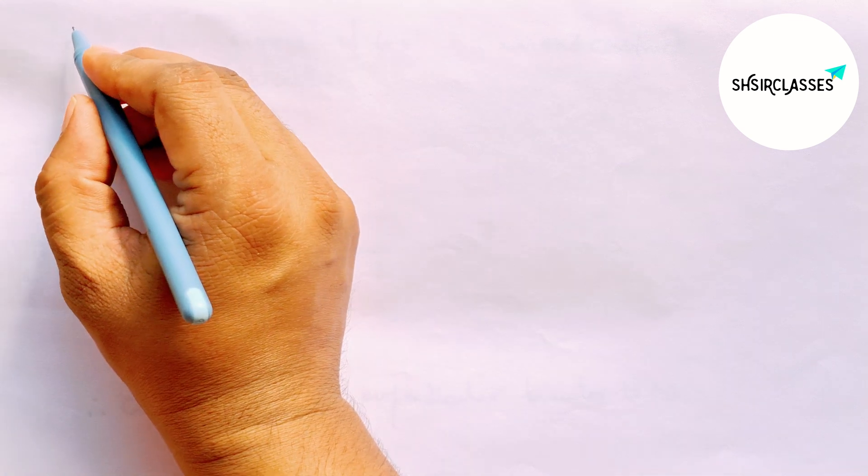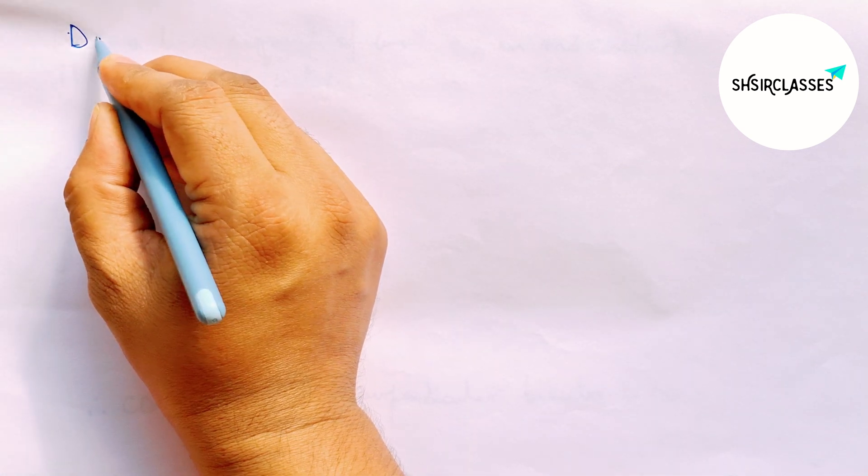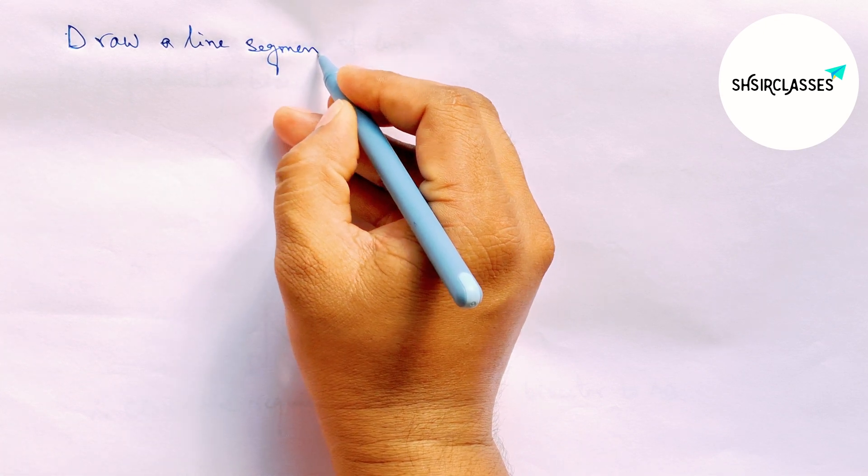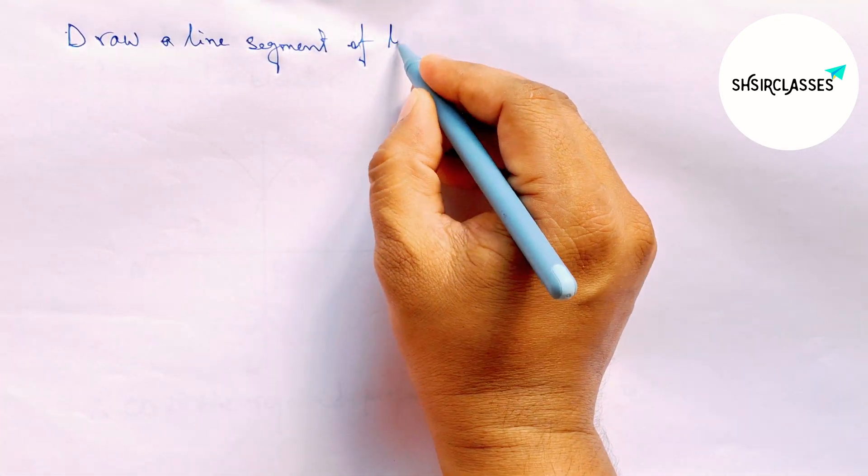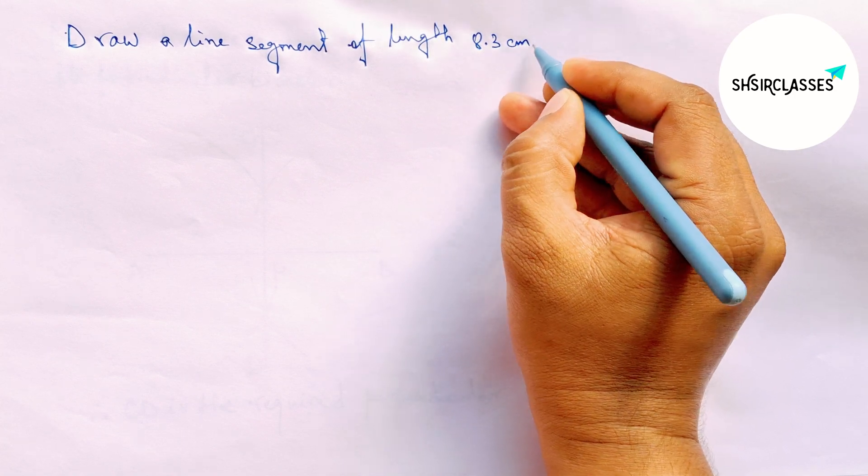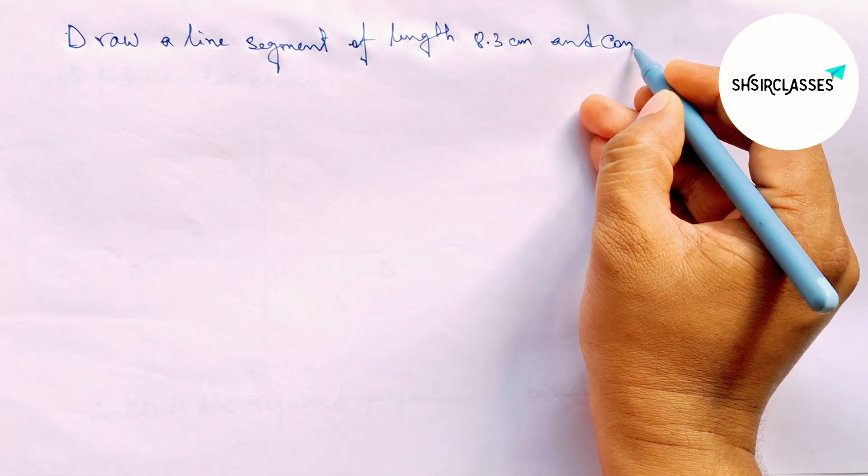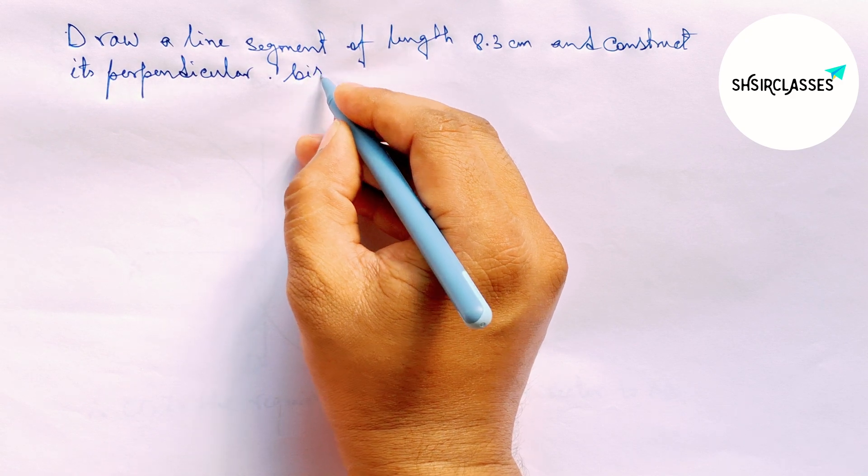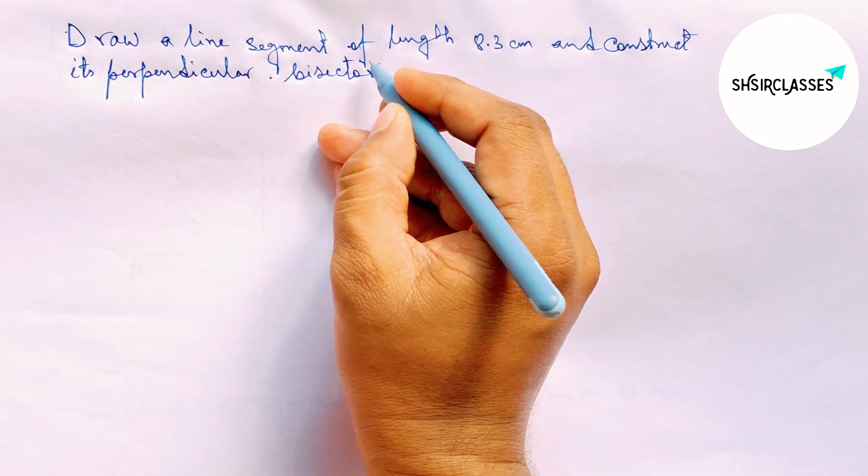Hi everyone, welcome to SayShare Classes. Today in this video, draw a line segment of length 8.3 centimeter and construct its perpendicular bisector to the given line in easy way. So please watch the video till the end.